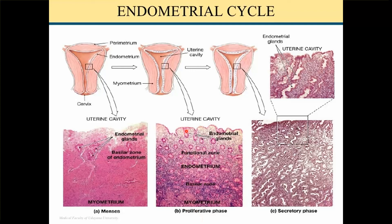In the secretory phase the glands are dilated and filled with secretion. The blood vessels are spiral and they reach to the superficial layer. You can see all three different types here — this is the menstrual phase with the degenerating endometrium.